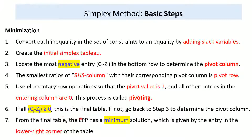Step 7: from the final table, the linear programming has a minimum solution given by the entry in the lower right corner. In the case of maximization, we get the maximum value, because our objective is to maximize Z. To summarize, steps 3, 6, and 7 have minor modifications for minimization: in step 3, select the most negative instead of the most positive; in step 6, optimality is achieved when Cj minus Zj is greater than or equal to 0; and in step 7, we select the minimum solution from the lower right corner.